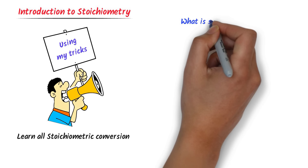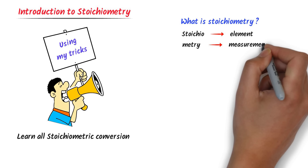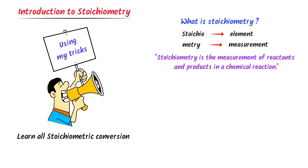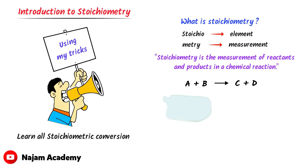The word 'stoichio' means element and the word 'metric' means measurement. So stoichiometry is the calculation of products and reactants in a chemical reaction. For example, consider this general chemical reaction. With the help of stoichiometry, we can find the number of moles of reactants and the number of moles of products.